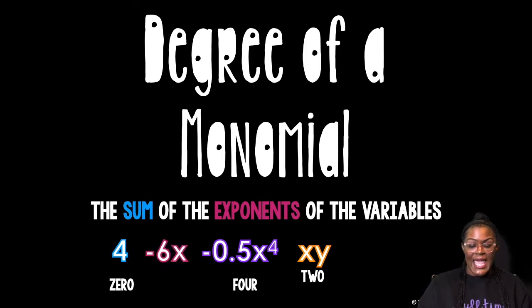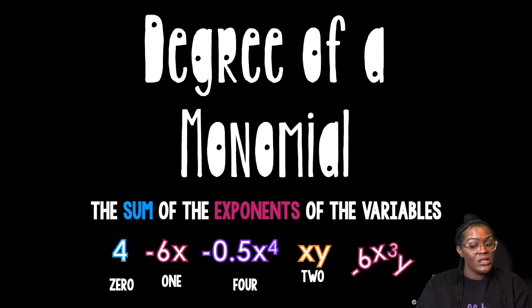Negative 6x. That's gonna be... What's the variable? The variable is the x. What's the exponent on the x? A 1.